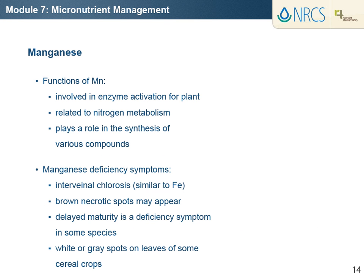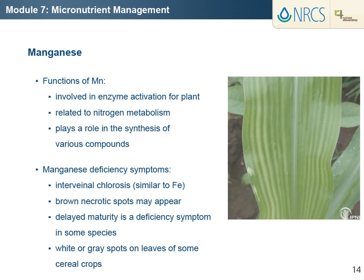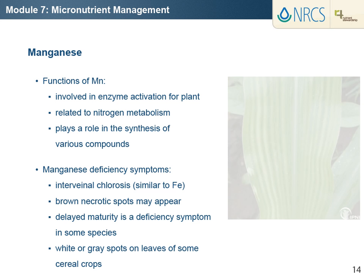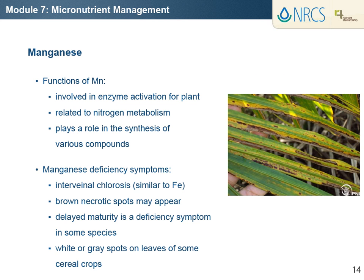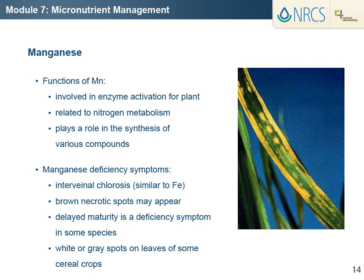Manganese is involved in enzyme activation for plant photosynthesis, nitrogen metabolism, and synthesis of various compounds. Interveinal chlorosis is a characteristic of manganese deficiency in many plants, and has a similar appearance as iron deficiency chlorosis. In severe deficiency situations, brown necrotic spots appear on leaves, and premature leaf drop occurs. Delayed maturity is another deficiency symptom in some species. White or gray spots on leaves of some cereal crops are signs of manganese deficiency, such as gray speck in oat due to tissue breakdown.